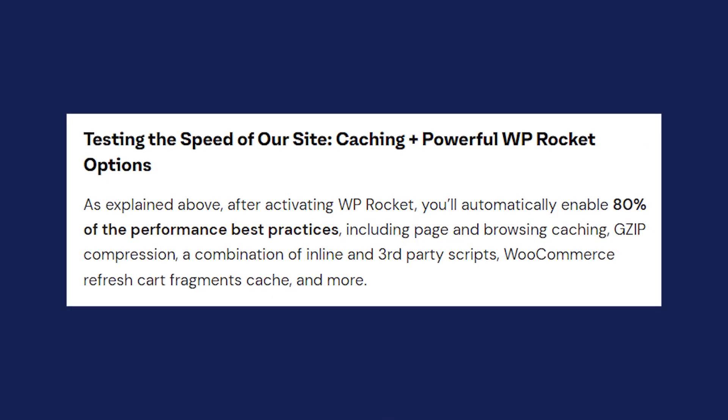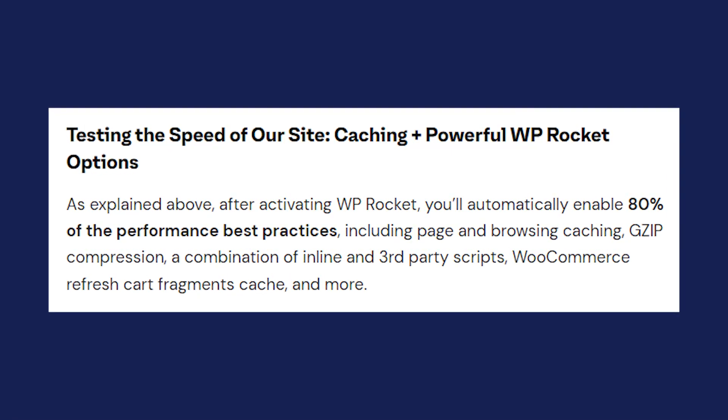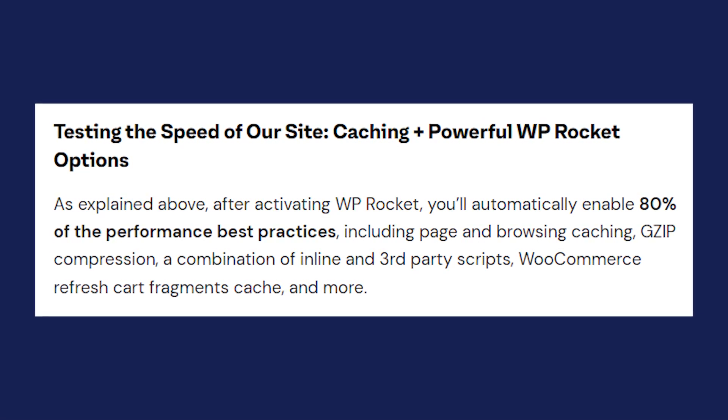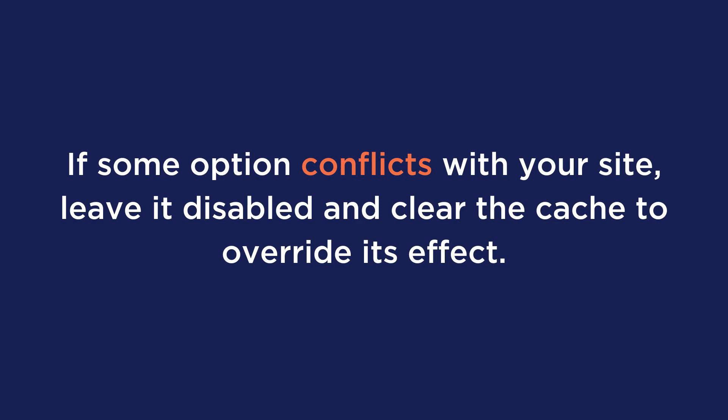We had a pretty long list of things to fix, so let's see how WP Rocket can help. After activating WP Rocket, you'll automatically enable 80% of the performance best practices. These include page and browser caching, gzip compression, a combination of inline and third-party scripts, WooCommerce refresh cart fragments cache, and more. Now, every time you enable an option in WP Rocket and save your changes, go ahead and check the website from an incognito window of the browser just to make sure everything is fine. This is particularly important for advanced options like those in the File Optimization tab, since they can sometimes conflict with other plugin or theme options. If some options conflict with your site, leave it disabled and clear the cache to override its effect.